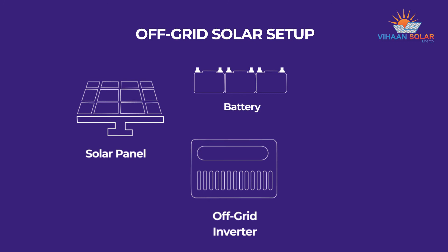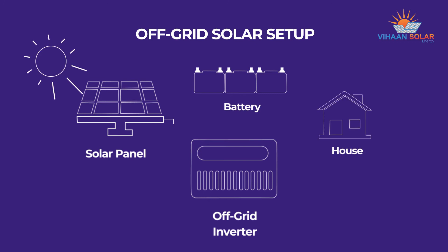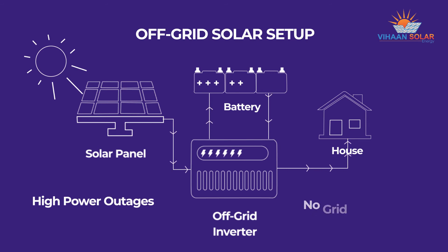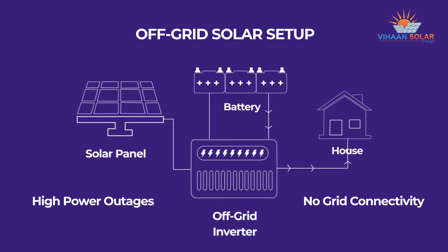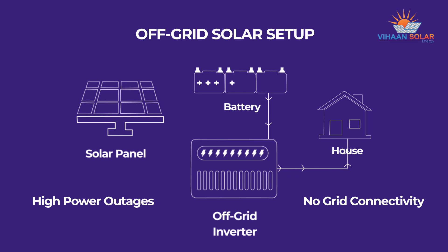Off-grid solar setup: the basic components are solar panels, off-grid inverter, battery, and electrical load. This setup is effective in places with high power outages or no grid connectivity. An off-grid solar plant works even when there is no power supply from the mains or when the solar panels are not generating any electricity.